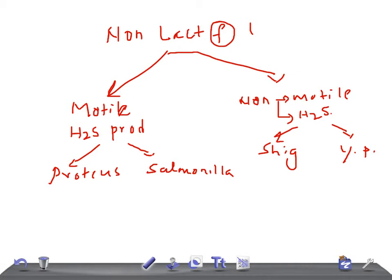Let's move on to Proteus. The important points for USMLE: first, Proteus has swarming motility — remember, swarming motility. They are urease positive — remember, urease positive. They are also indole positive.